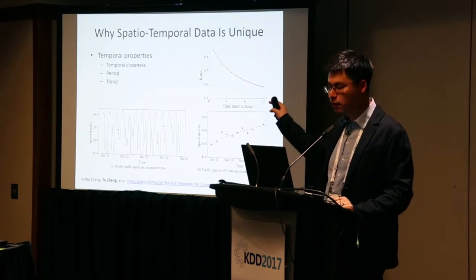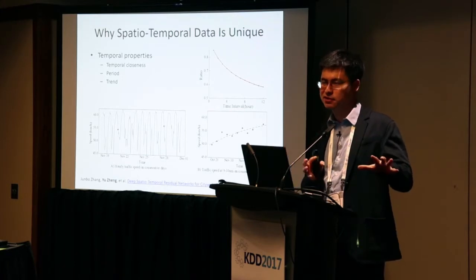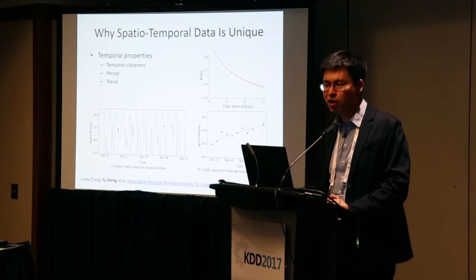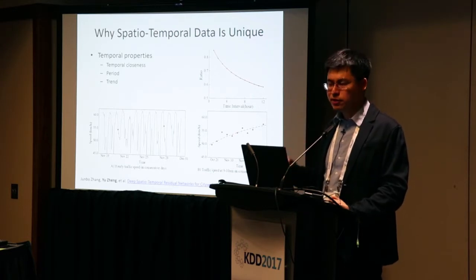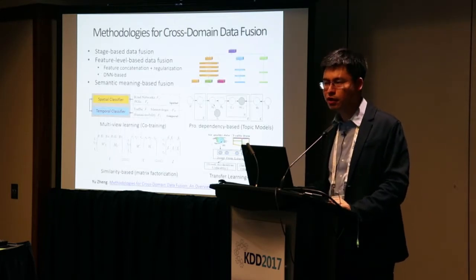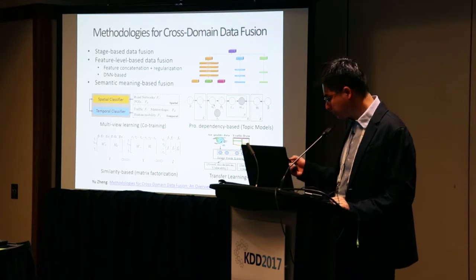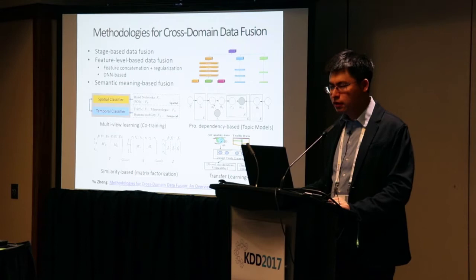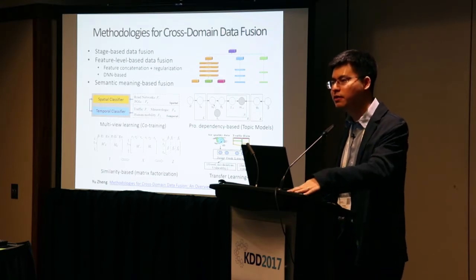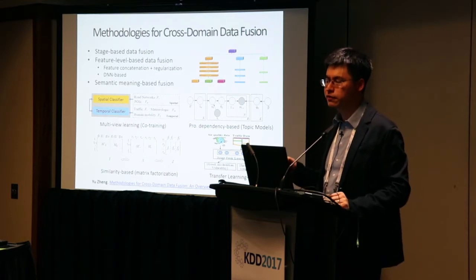If we cannot model these three temporal properties and just treat spatial-temporal data like text or image data, our model's performance will not be good. This is why spatial-temporal data is different. I will give more concrete examples later. The second challenge is how to fuse knowledge across different domains — another major tutorial topic.